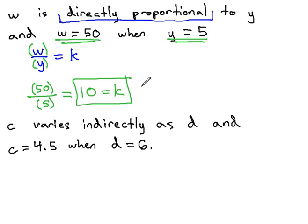Let's look at this next example and see if we can find the constant of variation again. Here, it says c varies indirectly as d.